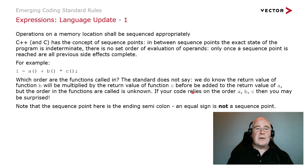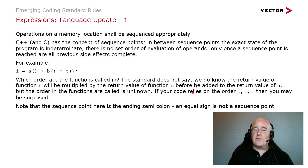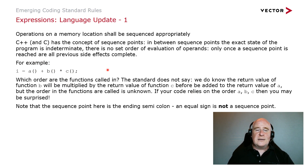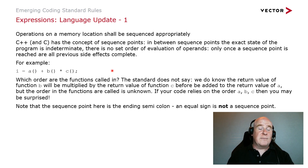So what are some of the coding standard rules we are seeing in the new standards? Operations on a memory location shall be sequenced appropriately. C and C++ have the concept of sequence points, and in between sequence points the exact state of a program is indeterminate — there's no set order of evaluation of operands. Only once the sequence point is reached are all previous side effects completed. For example, where we are multiplying and adding the return values of three functions, we can ask which order these functions are called in — the standard doesn't say. We know the return values of B and C will be multiplied together before being added to A from the rules of precedence, but it doesn't tell us the order in which the functions are called.